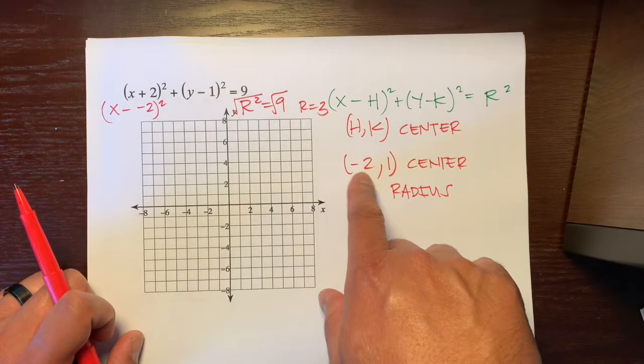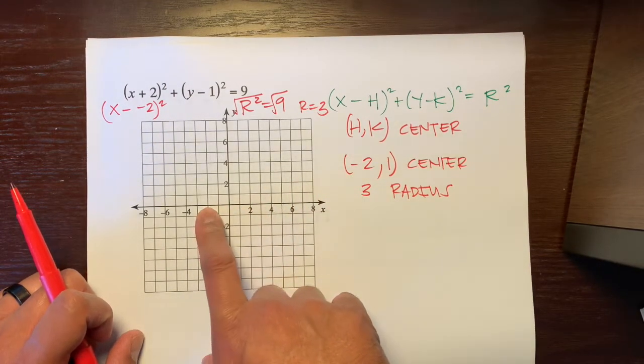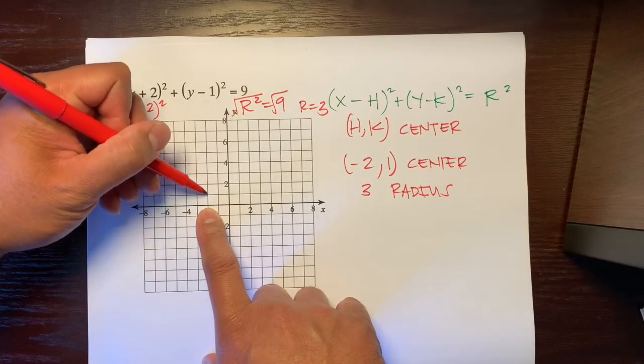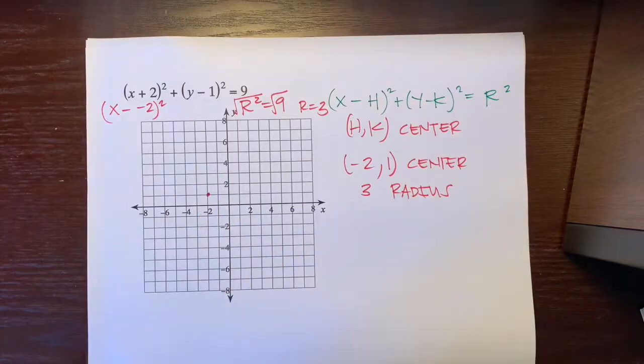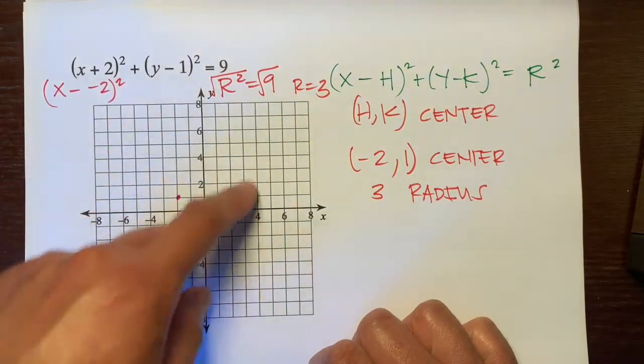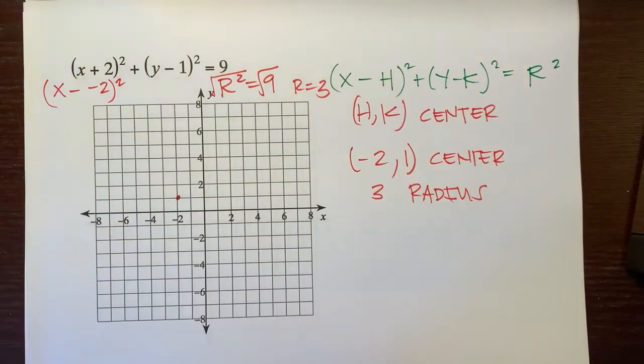Our center is at negative 2. This is our X value for the center. And the Y value is 1. So we'll go negative 2 to the left and up 1.